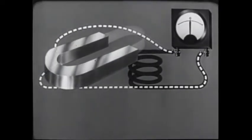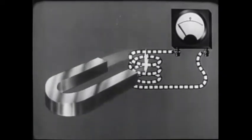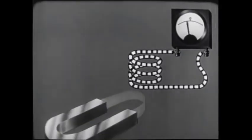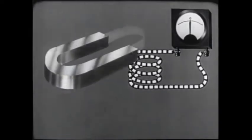Now coil the wire so that several turns are in the path of the field. Again, the current flow is increased. Stop moving the magnet, current flow stops.